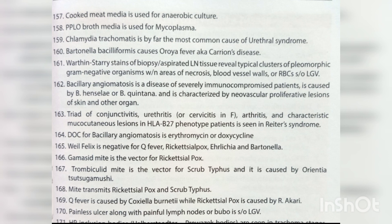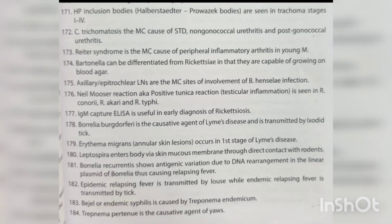Gamasid mite is the vector for rickettsial pox; trombiculid mite is the vector for scrub typhus caused by Orientia tsutsugamushi. Q fever is caused by Coxiella burnetii, while rickettsial pox is caused by Rickettsia akari. Painless ulcer along with painful lymph nodes (bubo) is suggestive of LGV. HP inclusion bodies are seen in trachoma stages 1–4. C. trachomatis is the most common cause of STD, non-gonococcal urethritis, and post-gonococcal urethritis. Reiter's syndrome is the most common cause of peripheral inflammatory arthritis in young males.